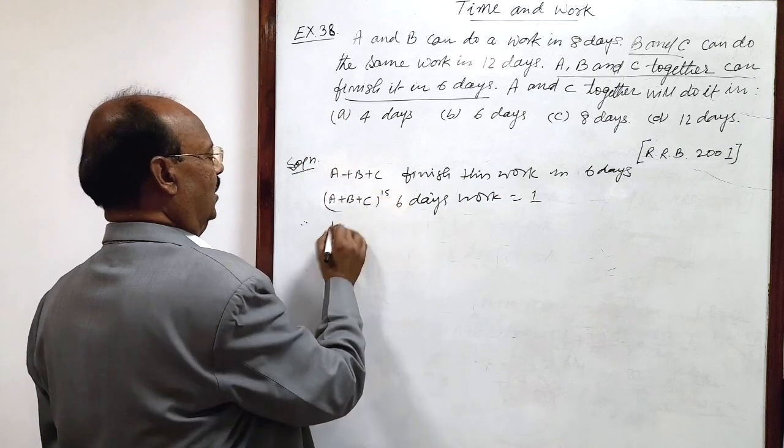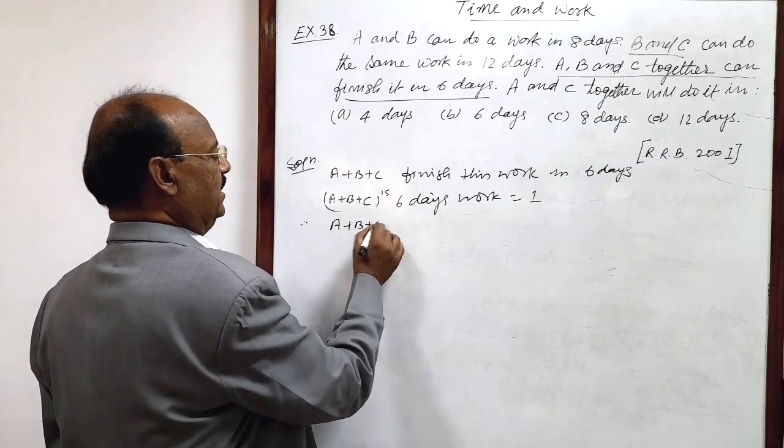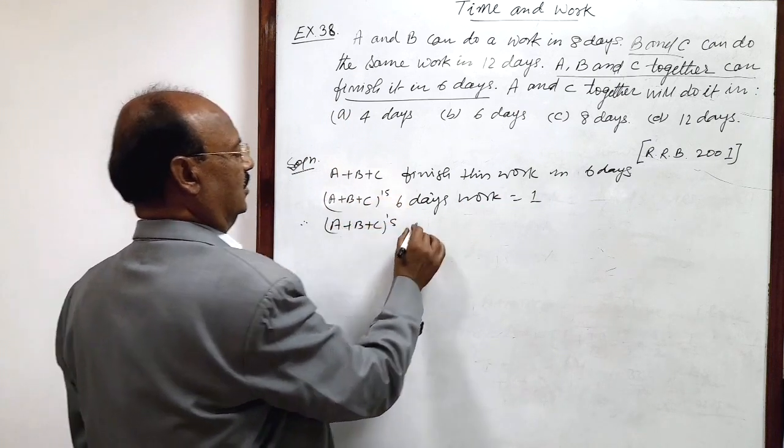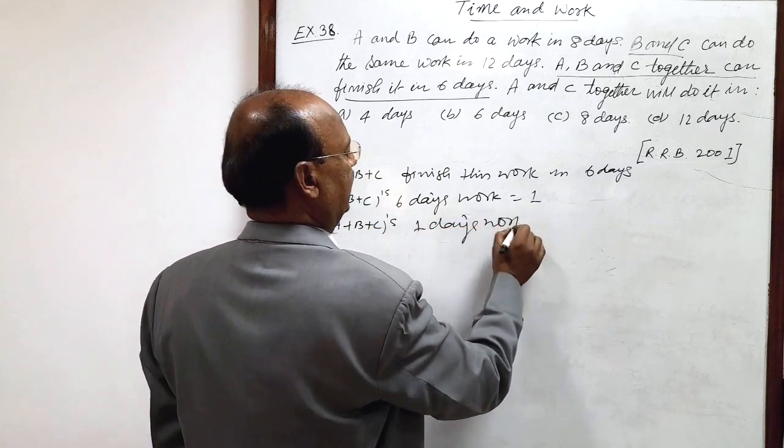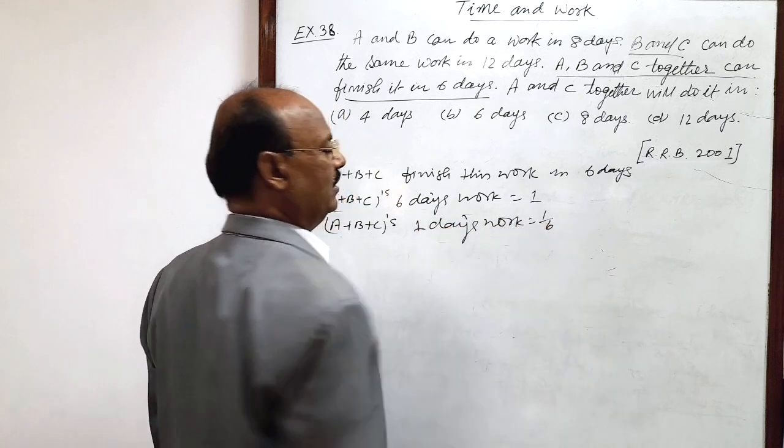So therefore, A plus B plus C, 1 day's work by unitary method is 1 by 6.